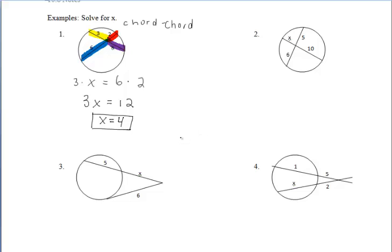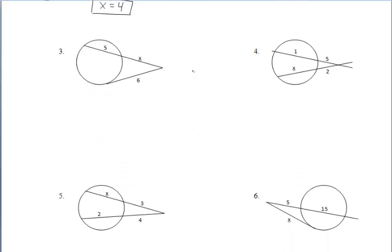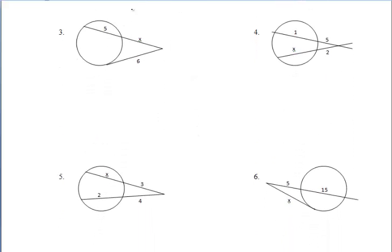Moving down to number 3. For number 3, we're working with a secant-tangent power theorem. If you recall, for this one, we're going to take the tangent and multiply it by itself, and then set that equal to the entire secant segment times the external part. So the tangent squared, or you can think about it as the tangent times itself, would be 6 times 6, or 6 squared.